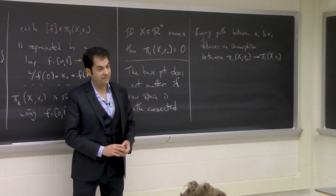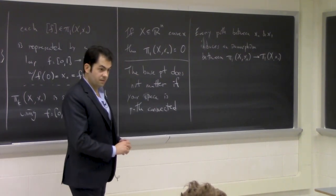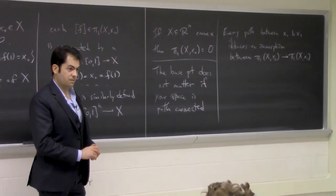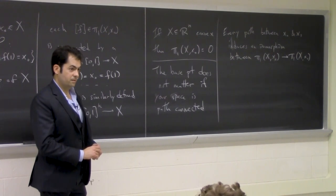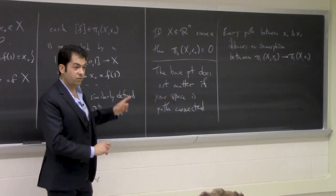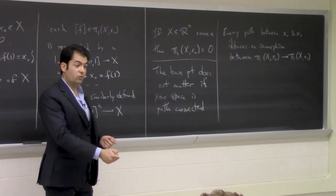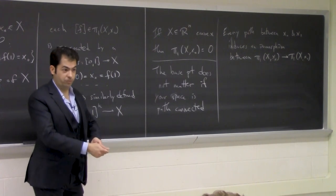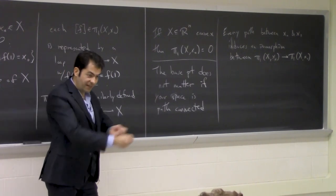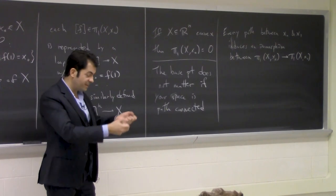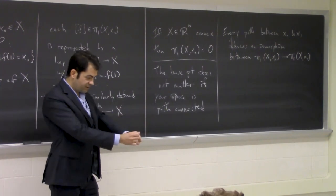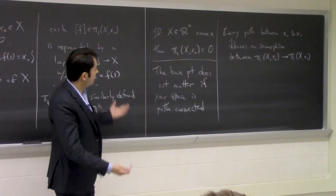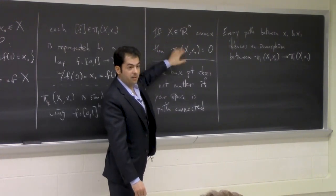If your space is ℝⁿ and you have a loop that wraps around twice, are those two the same? They are homotopic — you can transform one continuously to the other. Think about the loops as lassos: we throw a lasso and then tighten it up. On ℝⁿ, there's nothing for it to get stuck on, so you'll just keep tightening until you get the constant loop. There's nothing for you to detect on ℝⁿ.